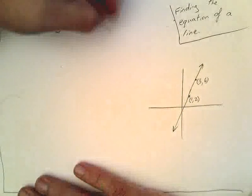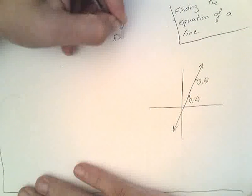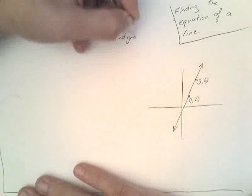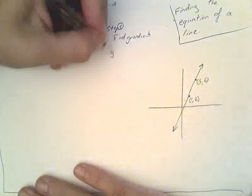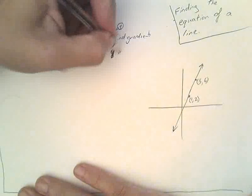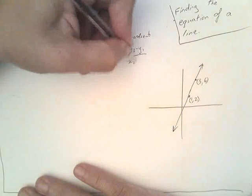Now, you guys should know how to find the gradient. So, step one, find gradient. I'm going to use our formula here: gradient m equals y2 minus y1 over x2 minus x1.